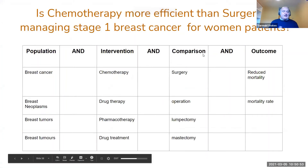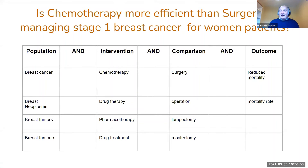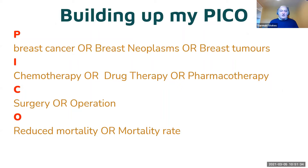Here is the initial draft search strategy. Under P (patient): breast cancer, breast neoplasms, breast tumors - and don't forget breast tumors can be spelled slightly differently. Under I (intervention): chemotherapy, drug therapy, drug treatment. Under C (comparison): surgery, operation, lumpectomy, mastectomy. Under O (outcome): reduced mortality, mortality rate. And now we're starting to build up our search strategy, which will then be run in the database.